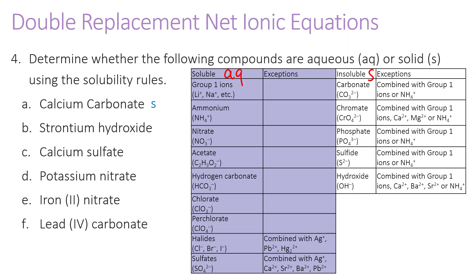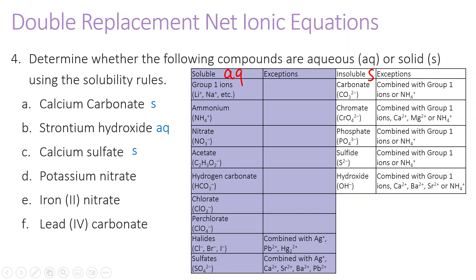For strontium hydroxide, I get aqueous — hydroxides are generally insoluble, but strontium is one of the exceptions. Calcium sulfate will be a solid because sulfates are soluble unless combined with calcium. Potassium nitrate and lead nitrate are both nitrates, which are always soluble with no exceptions. And lead carbonate is definitely going to be solid.